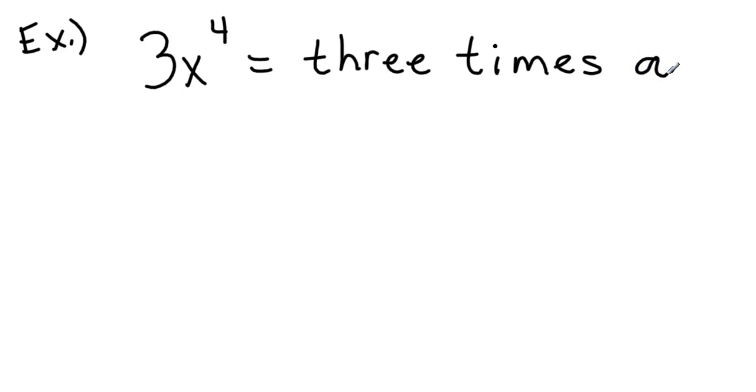I'm going to write a verbal expression for an algebraic expression. What that means is this is what it looks like written algebraically. How do I write it out in words? In this case, I see that there's a multiplication and a power. So I might write three times a number because we don't know what the number is. That would be our variable. And then what am I doing with that three times a number? I'm taking it to the fourth power.